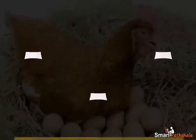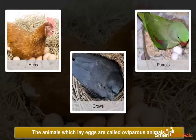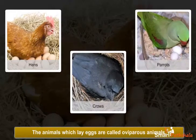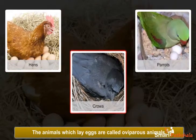Those animals which lay eggs are called oviparous animals. Crows and parrots are some of the examples of oviparous animals.